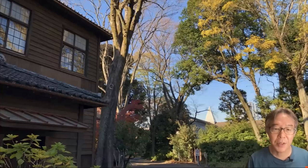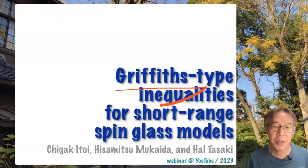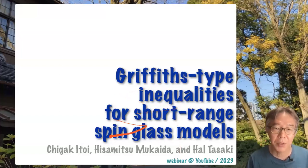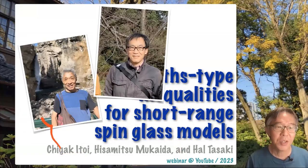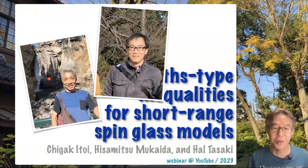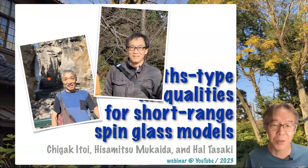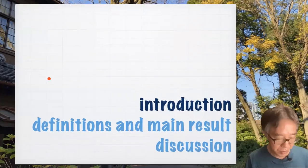Hi everyone, this is Hale Tasaki. In this short video, I'd like to discuss the main results of our recent paper entitled Griffith's Type Inequalities for Short-Range Spin-Glass Models. This is a joint work with my two friends Chigaku Itoi and Hisamitsu Mukaida. I've known them for many many years, like since before some of you were even born. But this is the first time that the three of us collaborate, and I'm very happy about that. Let's get started with the introduction.